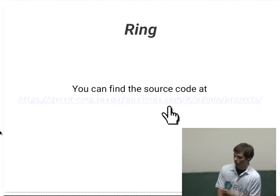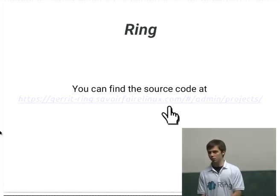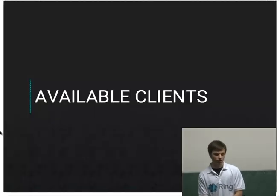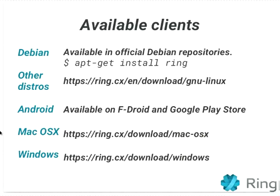If you want to see the source code or contribute to Ring, you can find us on our Gerrit server. All of our clients are open source across multiple platforms. We already have a working client in Debian that is in the repositories as of this week — you can type 'apt-get install ring' right now. If you're using another distro, we have repositories. Our apps are available on both F-Droid and the Google Play Store, and you can download apps for other platforms on our website.